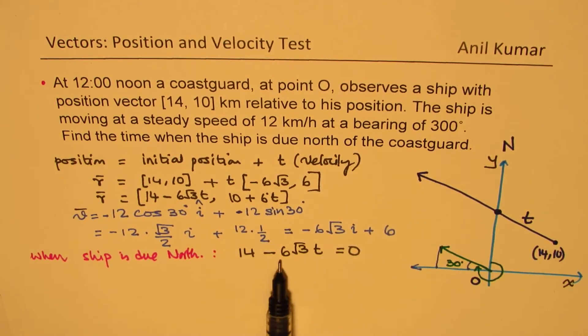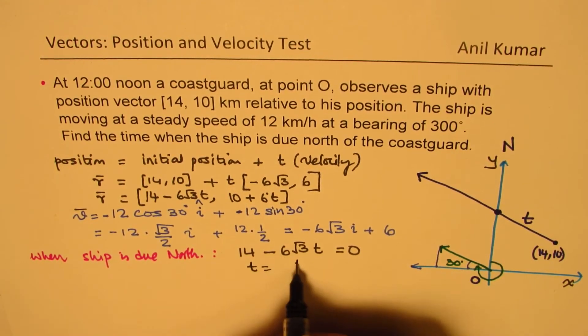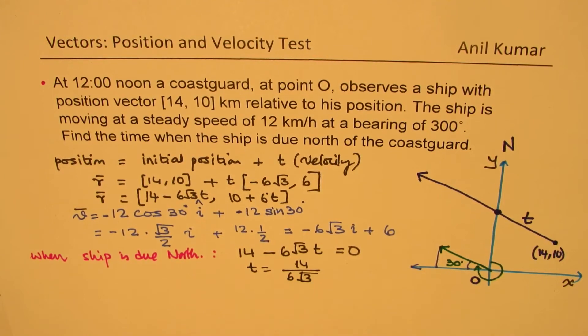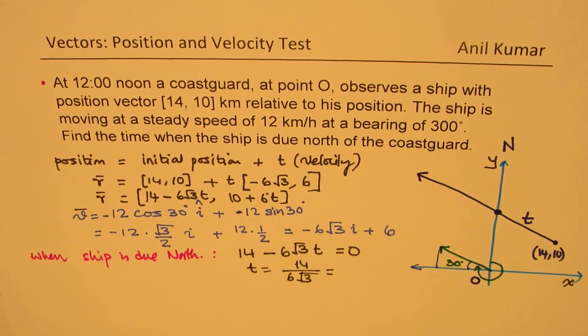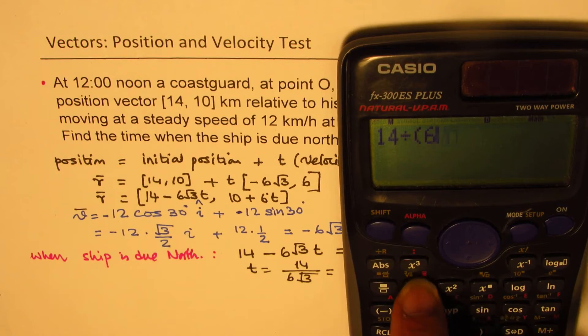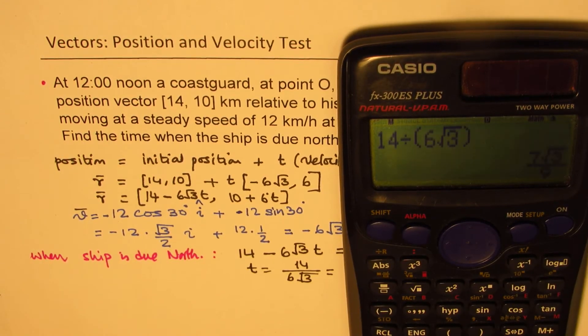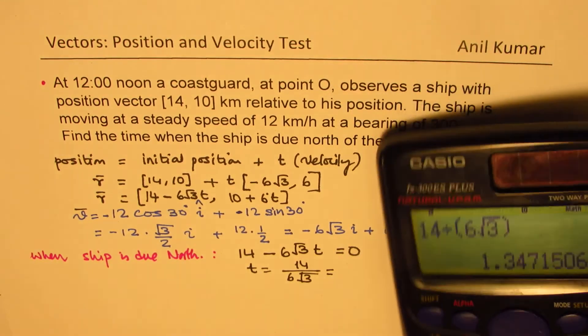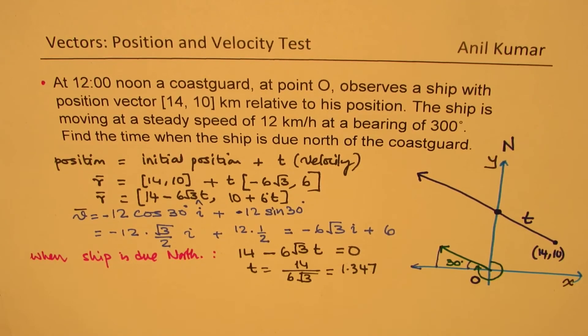From here, we can find the time. We can get T equal to 14 over 6√3. So that is how we get time, and the units will be hours. Let's use the calculator. We have 14 divided by 6√3, and that equals, in decimals, 1.347.